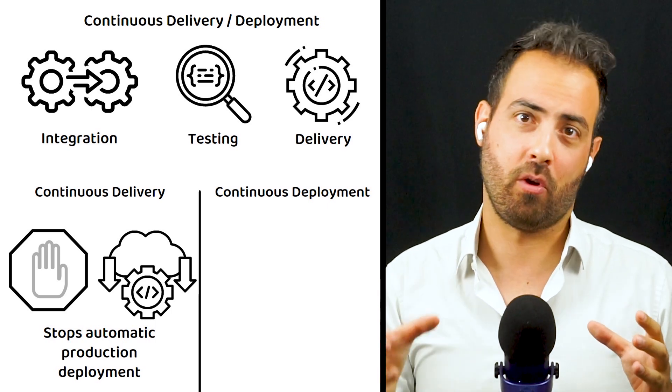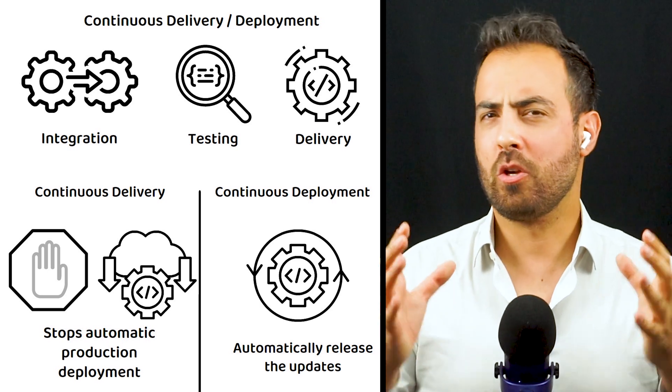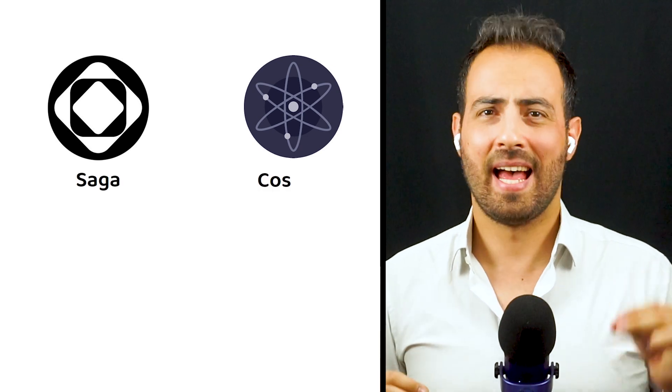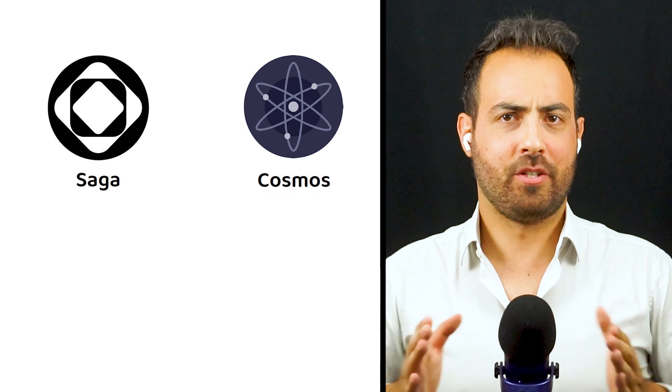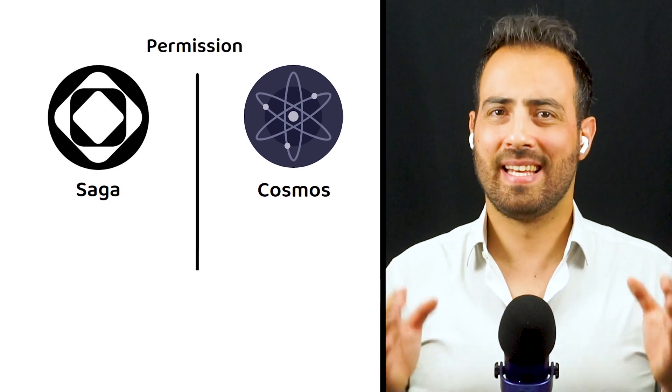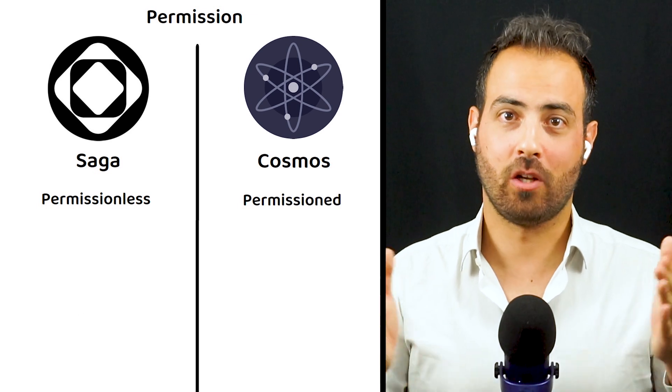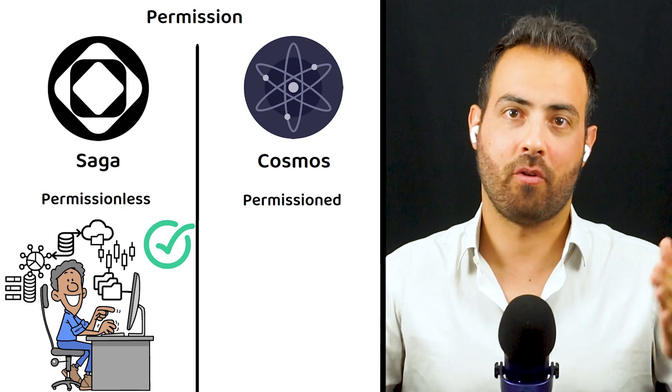You may be wondering what makes Saga any different from Cosmos, as on the surface they are somewhat similar. The short answer is permission—Saga is permissionless, meaning anyone can create and launch a blockchain through the platform as long as they have enough Saga tokens to pay for the cost of setting up and maintaining the blockchain.